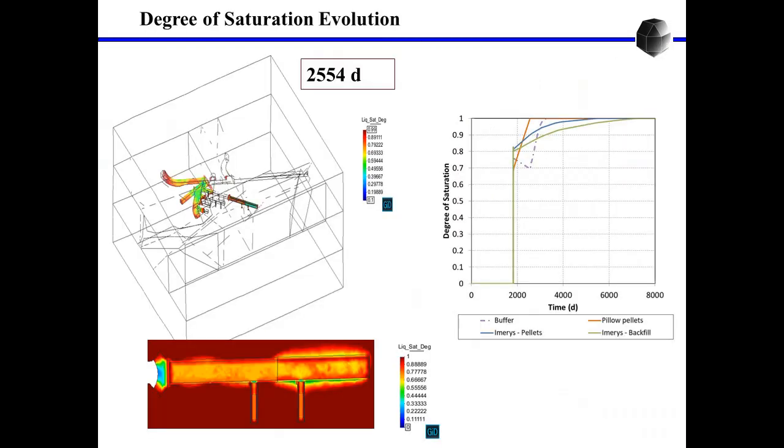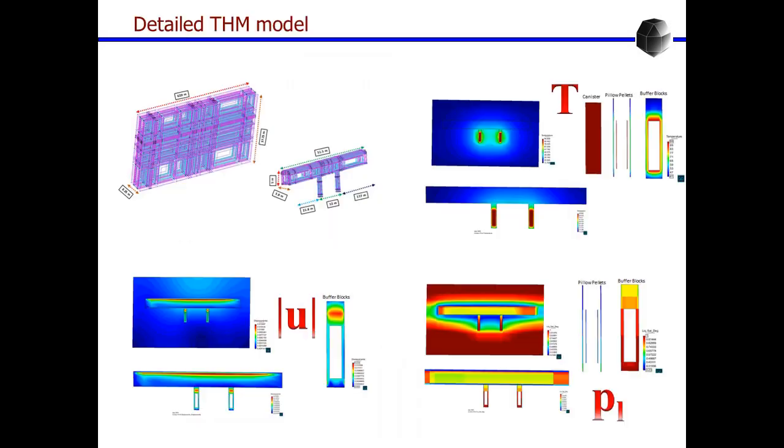The model in this case is not sufficiently detailed in the zone of interest of the barrier. So normally we can do other types of models. This is a more detailed model for the zone of interest of the drift and boreholes. And then here you can see the solution for temperature, liquid pressure, and displacements.